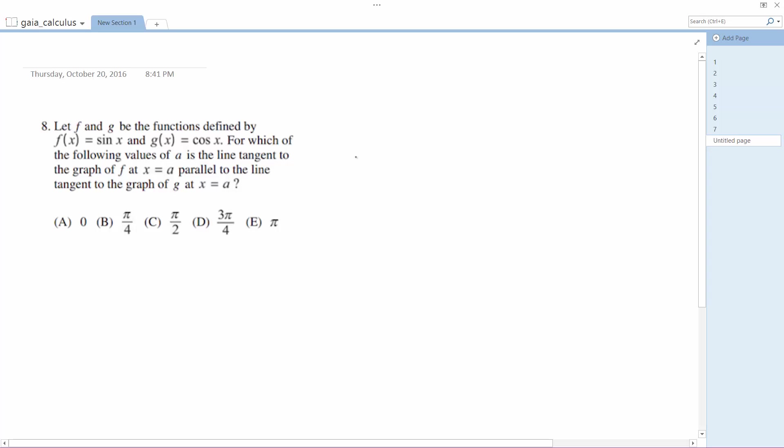So what we need to do here is set this up. f of x is equal to sine of x, and g of x is equal to cosine of x.